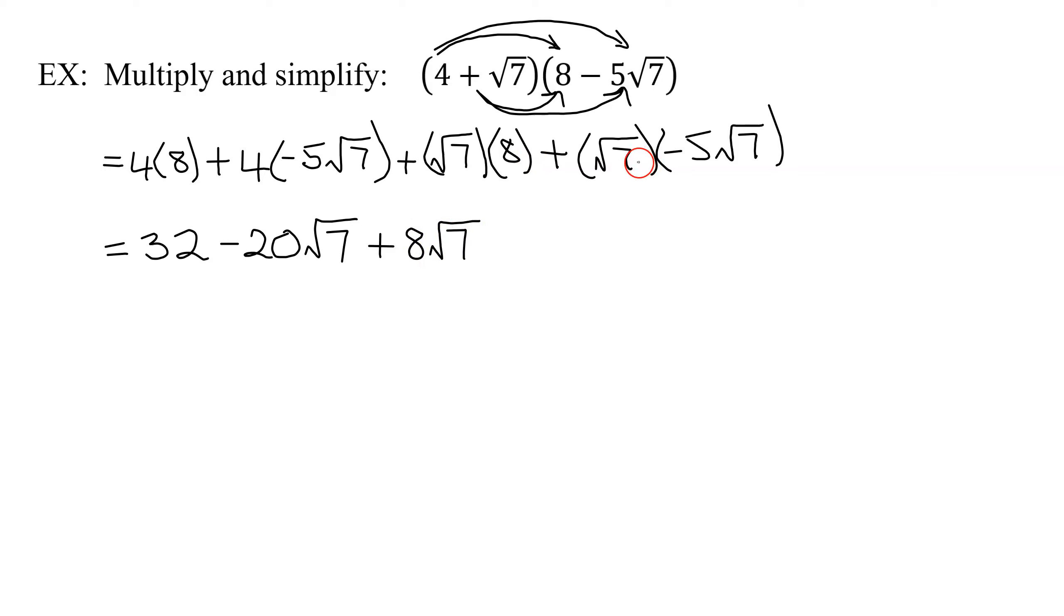And then our last term, we have the square root of 7 times negative 5 times the square root of 7. So I'm going to write my negative 5 first, multiplied by the square root of 7 times 7 is 49. Remember, the square root of 7 times the square root of 7 is the square root of 7 times 7 is 49.